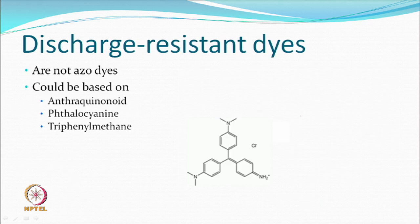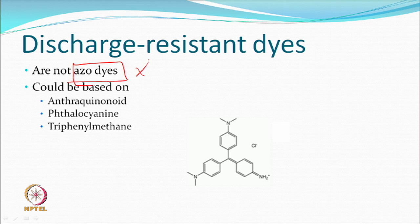On the other hand, discharge-resistant dyes should definitely not be azo-based — that is the primary criterion. They can be anthraquinonoid, phthalocyanin, or triphenylmethane based, the latter of which could be cationic dyes, depending on the fabric-dye combination being used. Such structures will serve as discharge-resistant dyes.